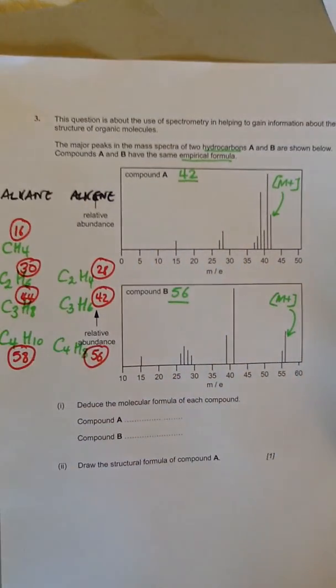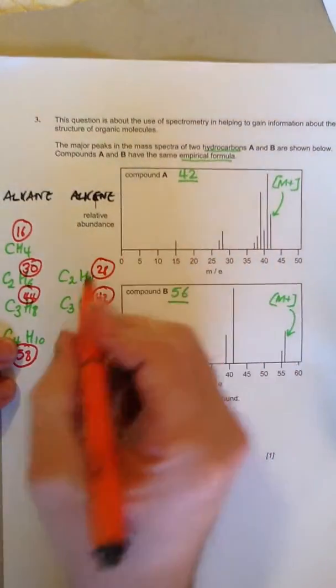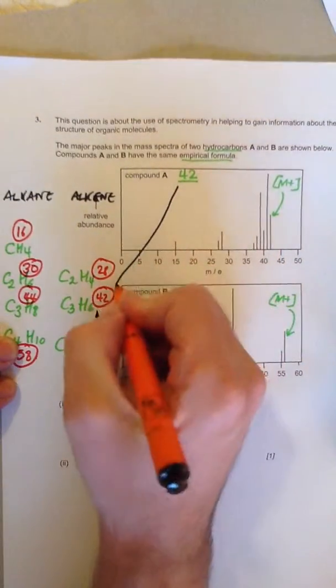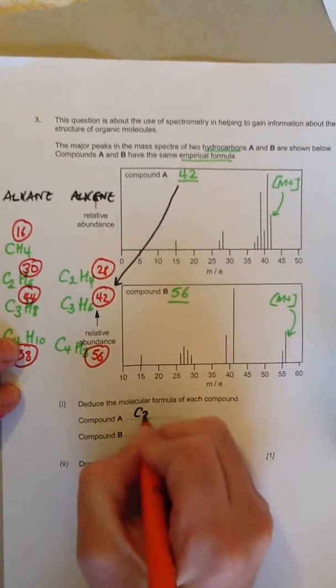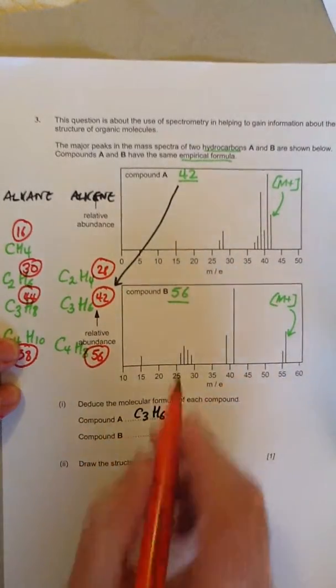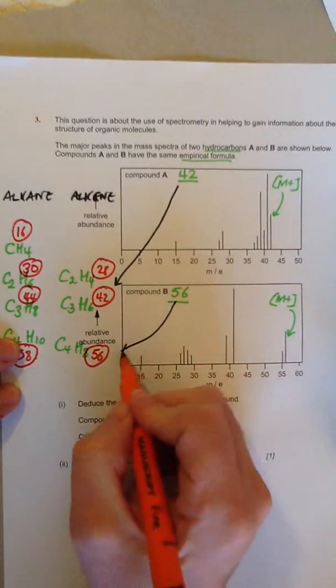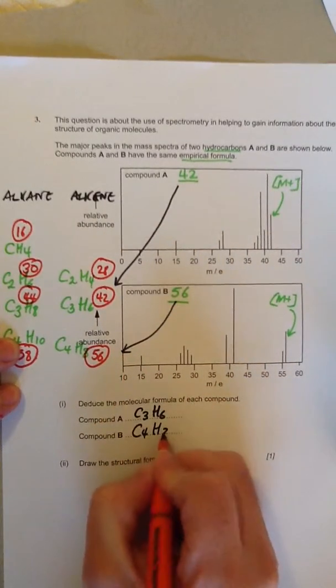So let's compare these with the values we've got. We know something has a mass of 42, so compound A must be propene, and compound B must be butene C4H8.